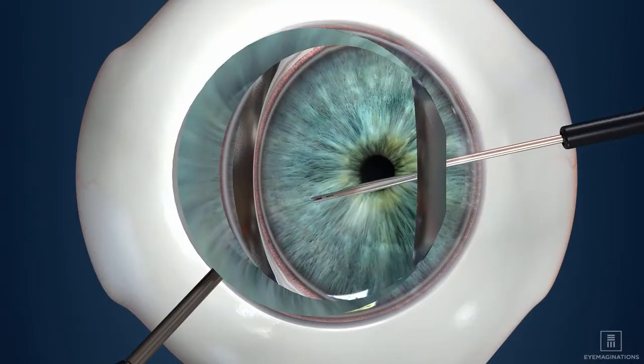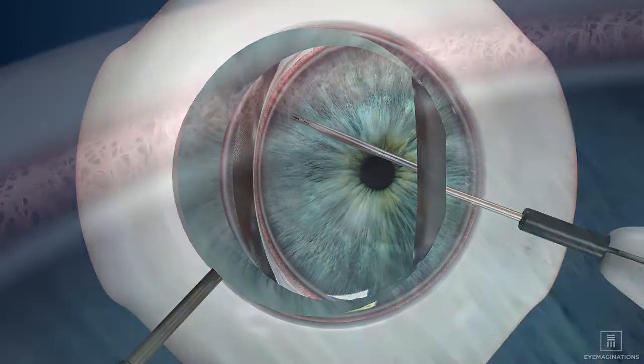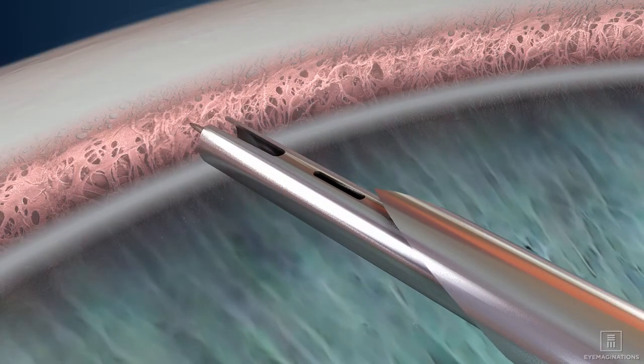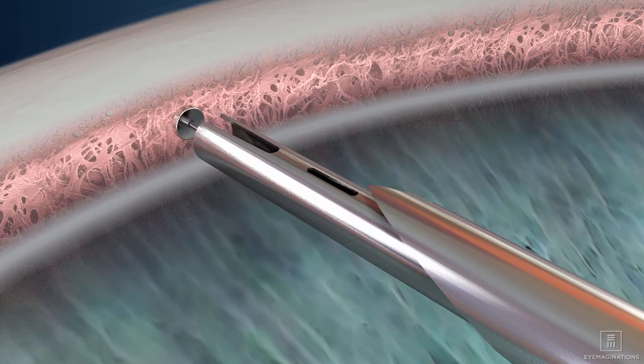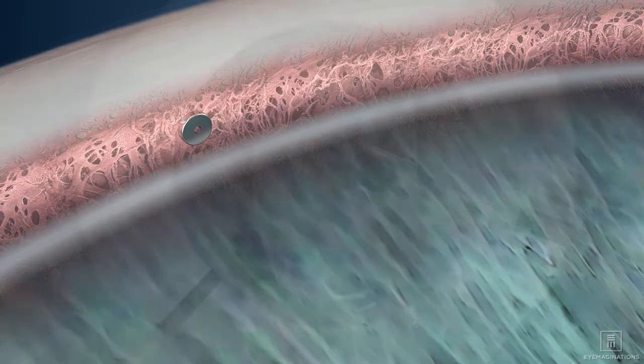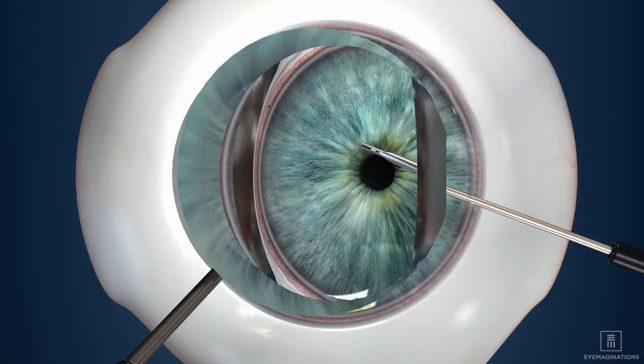The handpiece is then rotated and the second Eye Stent Inject is placed, creating an additional pathway for fluid to drain. The handpiece is then withdrawn from your eye.